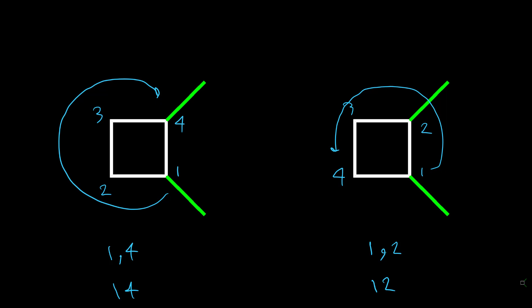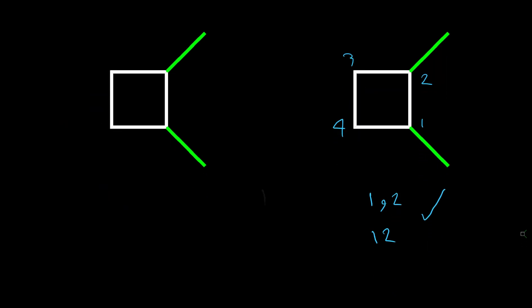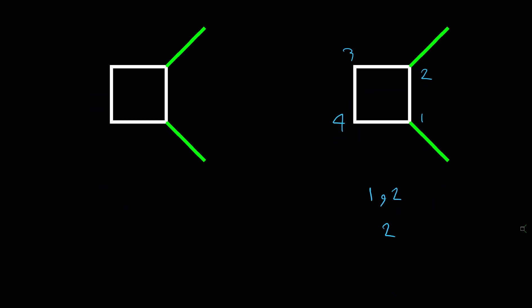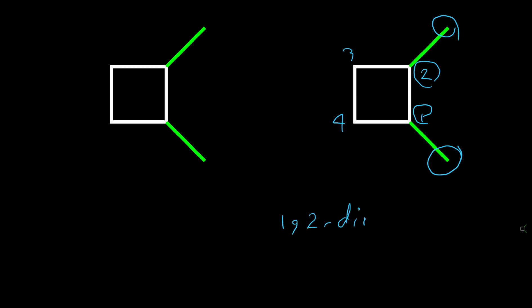So 1,2 is lower than 1,4, and our choice is this method. After numbering the ring we can write the name of the compound. On carbon one and carbon two we have a methyl group, so: 1,2-dimethyl. The parent has four carbons, so the name is 1,2-dimethylcyclobutane.